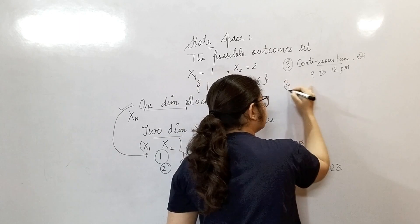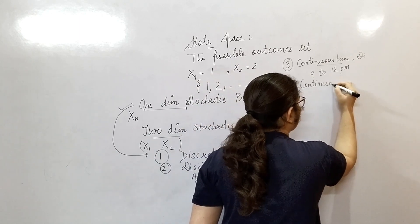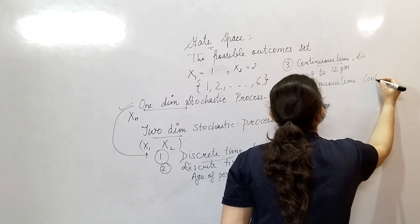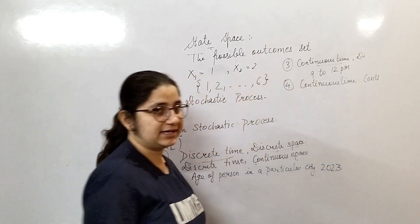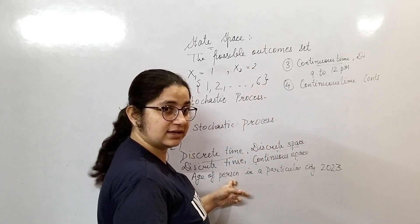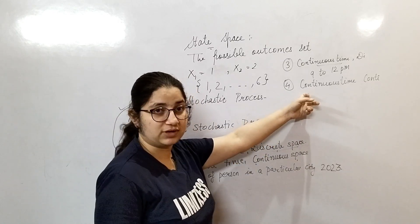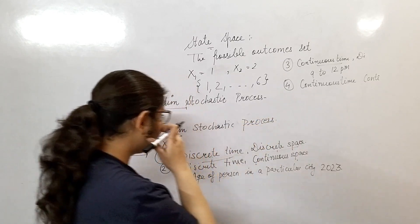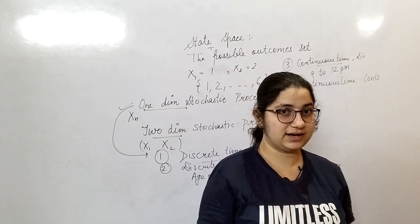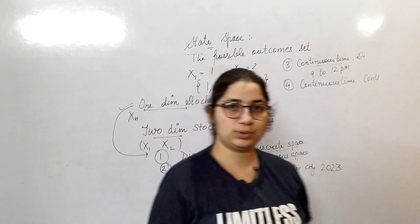The fourth type is continuous time and continuous state space. You can make an example of this from the second example I gave. So these are the four types into which one-dimensional stochastic processes are classified. If you have any query, you can comment.